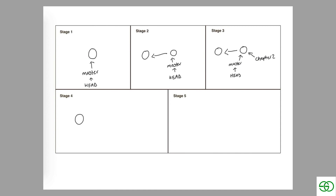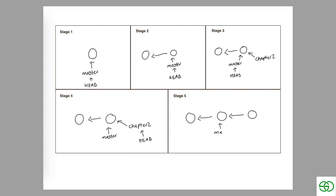In stage four we actually switch into our chapter2 branch, so the HEAD pointer will now be pointing to the chapter2 branch rather than master. Finally, in stage five we make another commit — so in total we have three commits — and since we're on the chapter2 branch, that branch moves to point to the latest commit. That was the solution for this exercise — see you at the next lesson.